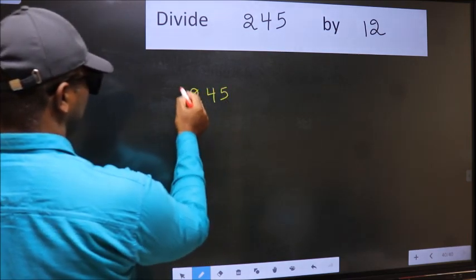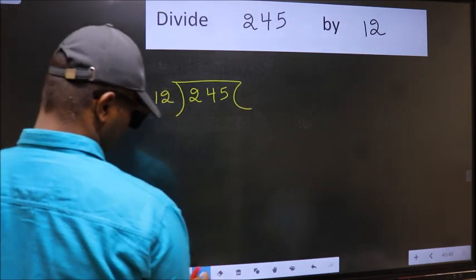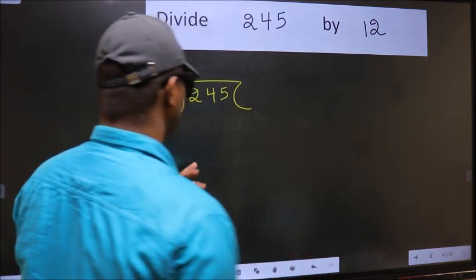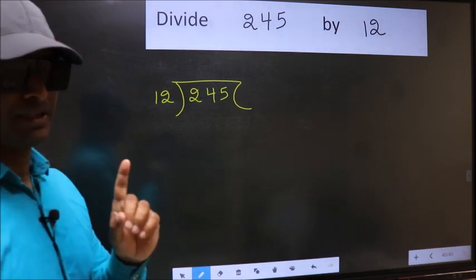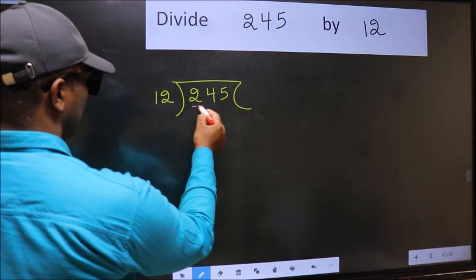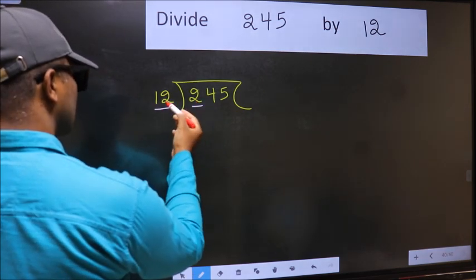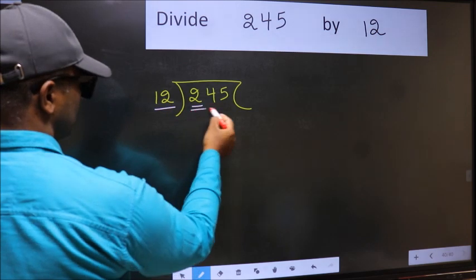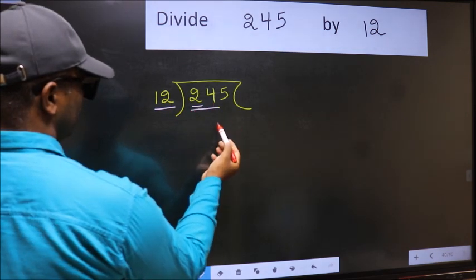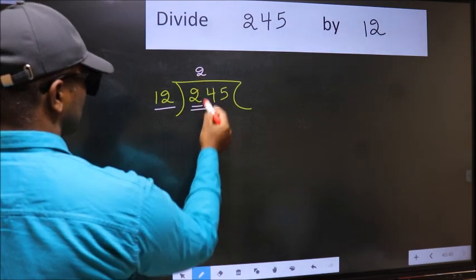245 and 12 here. This is your step 1. Next. Here we have 2 and here 12. 2 is smaller than 12. So we should take 2 numbers, 24. When do we get 24 in 12 table? 12 times 2 is 24.